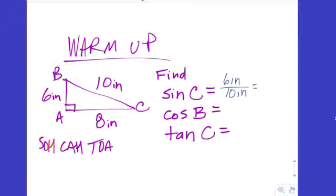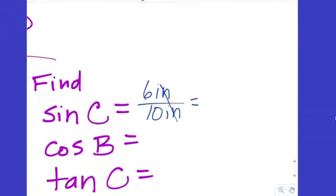A word about units: what happens to them in a trig ratio? They divide out. So a trig function is a unitless ratio that measures two of the three sides of a right triangle to each other. And 6 over 10 simplifies to 3 fifths, so sine of C equals 3 fifths.